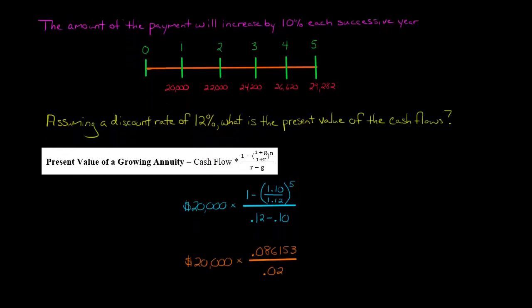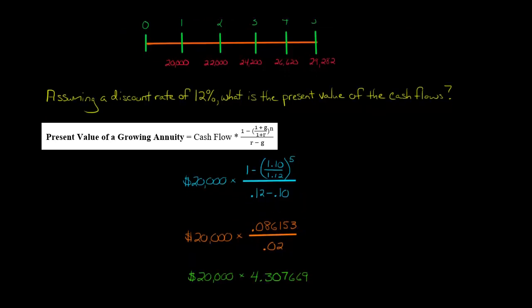Now when we simplify the numerator here, it's this whole part. When we calculate that out, we get 0.086153. And then the denominator, 0.12 minus 0.10 is just 0.02.